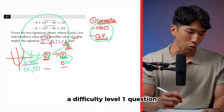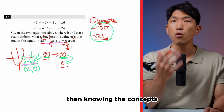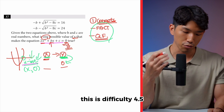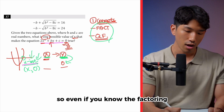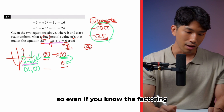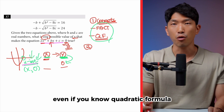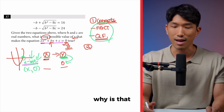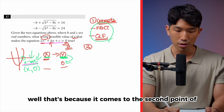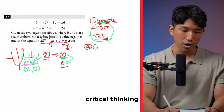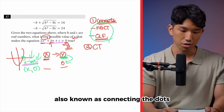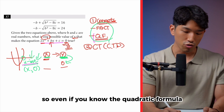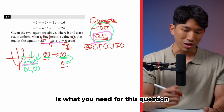If this were a difficulty-1 question, knowing the concepts alone would get you to the answer. But this is difficulty 4.5 — so even if you know factoring and the quadratic formula, you still won't be able to solve it. That's because it comes down to the second point: critical thinking, also known as connecting the dots. Even if you know the quadratic formula is what you need, the hard part is making the connections.